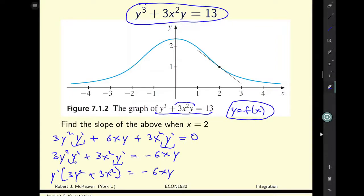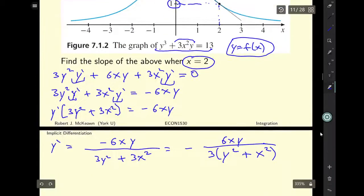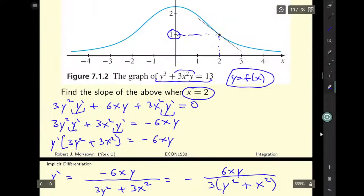Now there's a couple of ways to approach this. You can see that we want to find the slope when x is equal to 2. I can use the graph. So if x is equal to 2, then y is going to be equal to 1. If I wasn't going to do that, I'd have to use this expression. I've had y cubed plus 3 times 2 squared y is equal to 13.